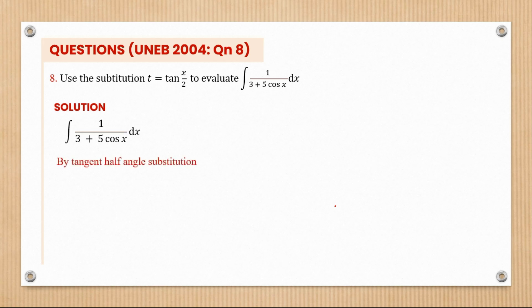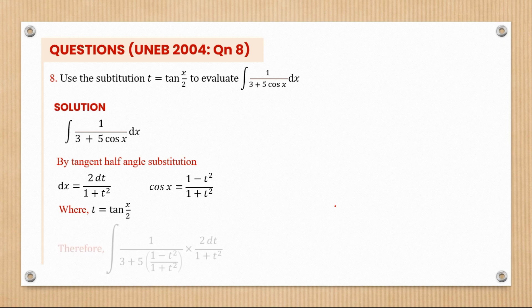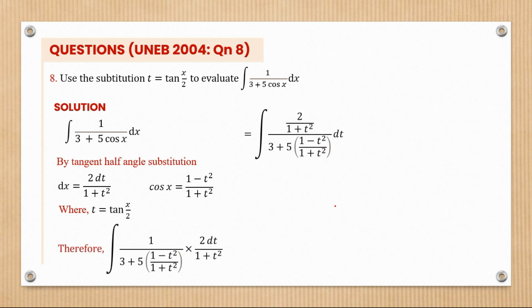By tangent half-angle substitution, we have dx = 2dt/(1 + t²), and cos x = (1 - t²)/(1 + t²), where t = tan(x/2). If this doesn't make sense, refer to the video on tangent half-angle substitution, also known as Weierstrass substitution.